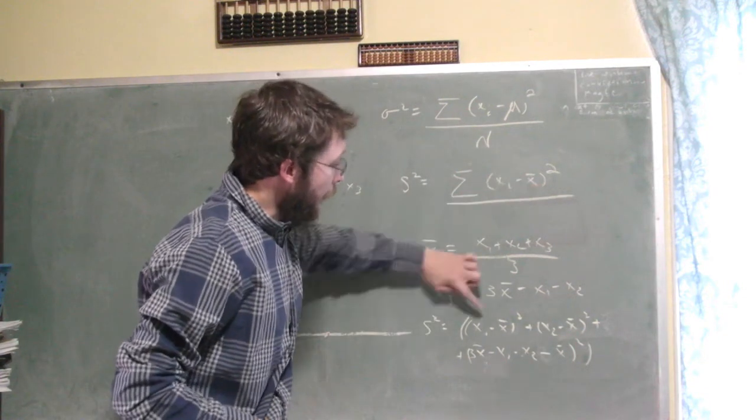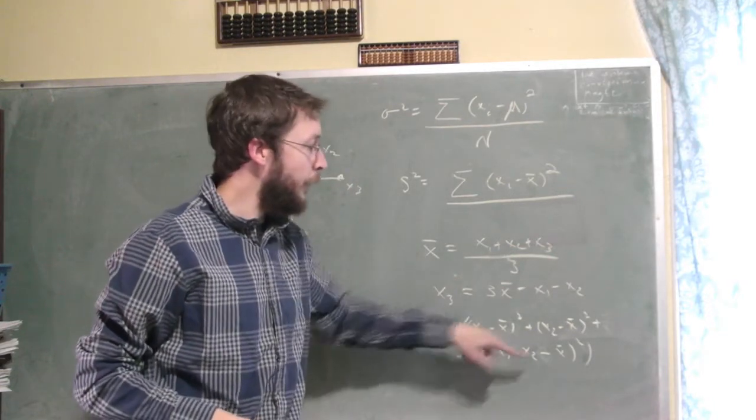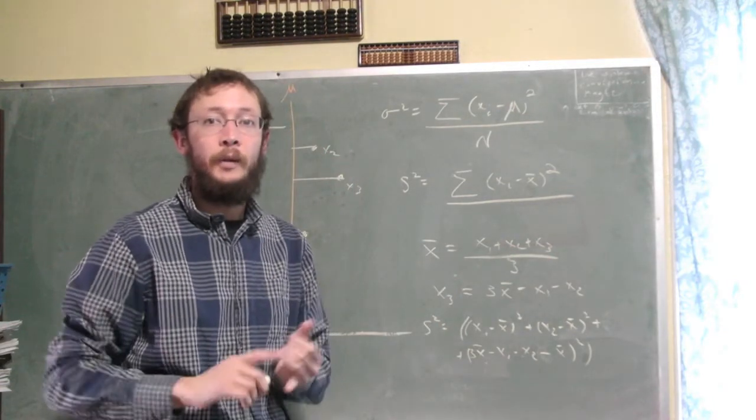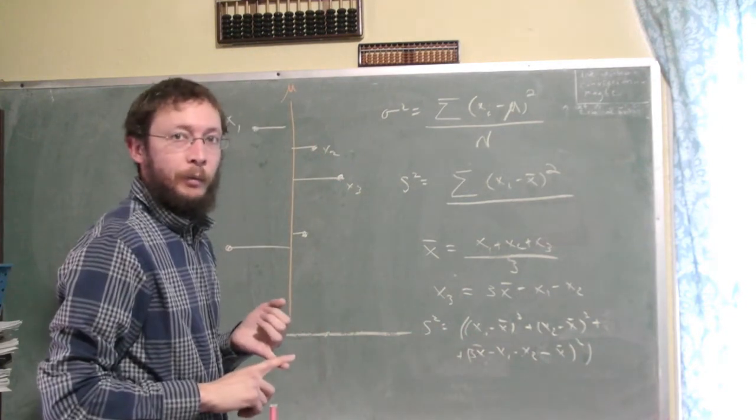So there's the sum, and we notice that when we expand that sum using this relation, we really only have two free random variables, x1 and x2.